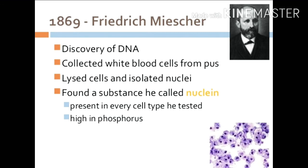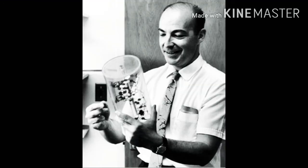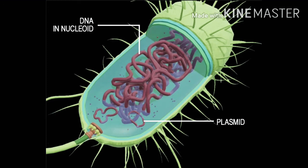A scientist named Kornberg was the first to synthesize DNA in vitro — they created DNA in the lab outside of a living organism. The DNA present in prokaryotic cells is called nucleoid.